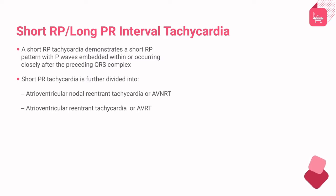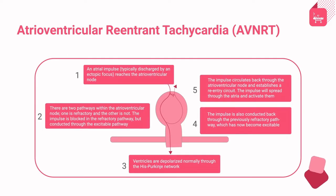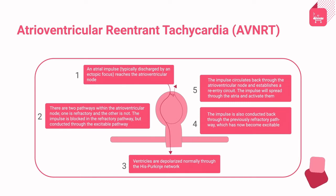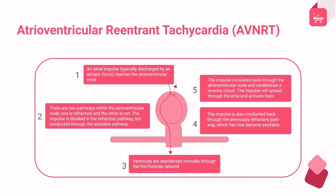AVNRT is the most common paroxysmal supraventricular tachycardia in adults and is more common in women than in men. In patients with AVNRT, the atrioventricular junction has two or more functionally discrete pathways: the fast and slow pathway. The fast pathway conducts impulses rapidly but has a relatively long effective refractory period. The slow pathway has a slow conduction velocity but a shorter effective refractory period than the fast pathway.